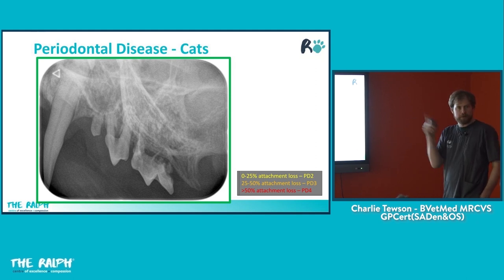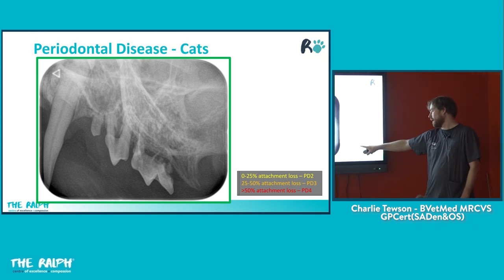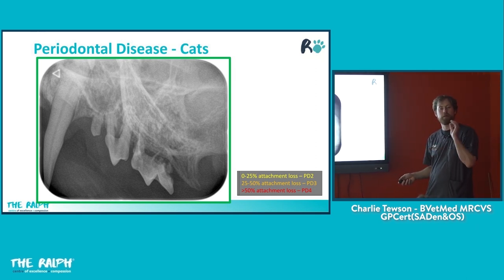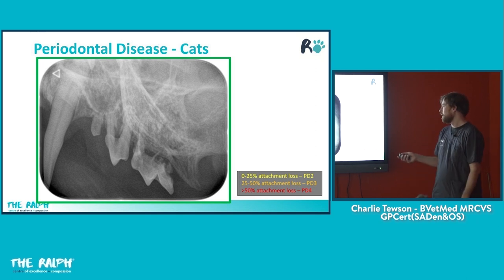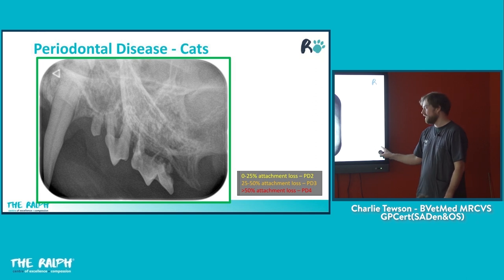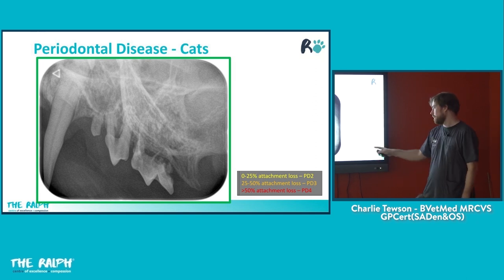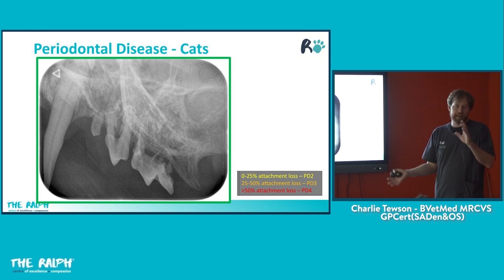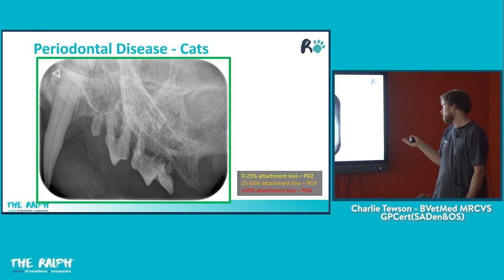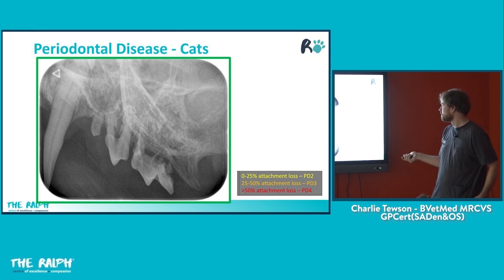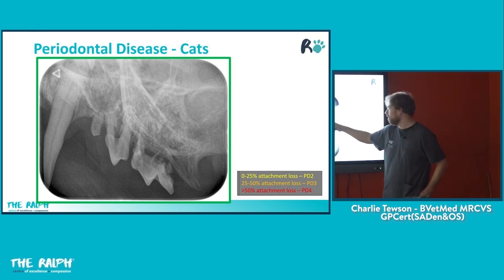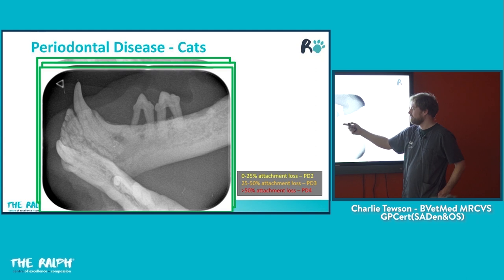It's worth talking about cats in the context of periodontal disease. While the same bone loss descriptions hold true for cats, we're more aggressive with our extractions. In cats, we would consider anything that's PD3 — 25% to 50% attachment loss — as arguably worth extracting, depending on the situation. At 50%, certainly there's no question. These are examples of severe periodontal disease in cats with complete furcation exposures.